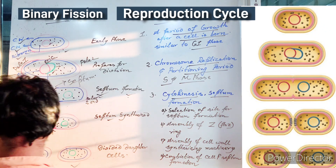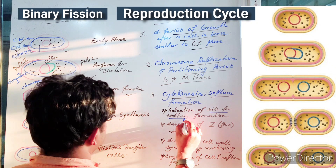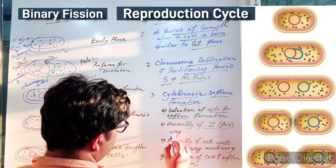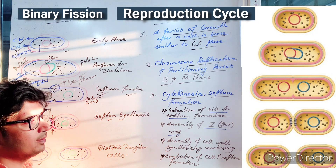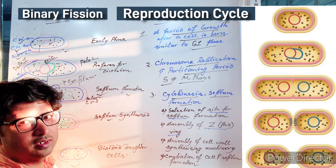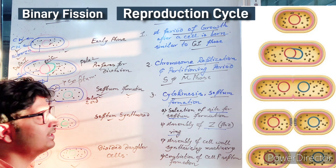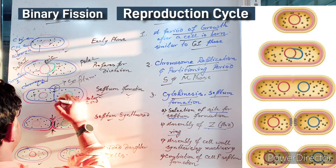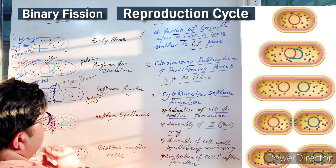First, the site for septum formation is selected — always the middle of the cell. Then assembly of the Z-ring occurs. The Z-ring is formed by bacterial tubulin proteins called FtsZ. FtsZ is compared with microtubule formation in the eukaryotic cell cycle. The Z-ring forms here and tells the cell to start septum formation in this region.